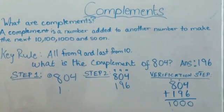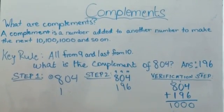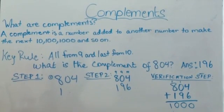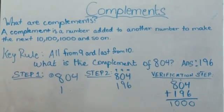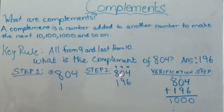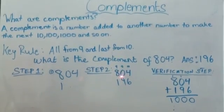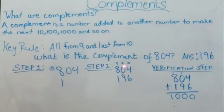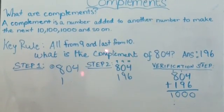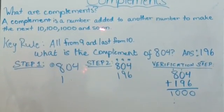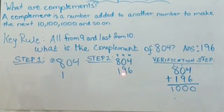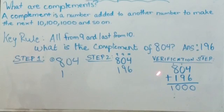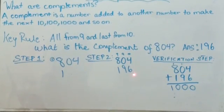Now let's try another example of a three-digit number that has a zero in the middle. Step one. Nine minus eight equals one. Step two. Now there's a zero in the middle, so just subtract nine, which it says all from nine and last from ten. So let's do nine minus zero which equals nine. And then last from ten. Ten minus four equals six.